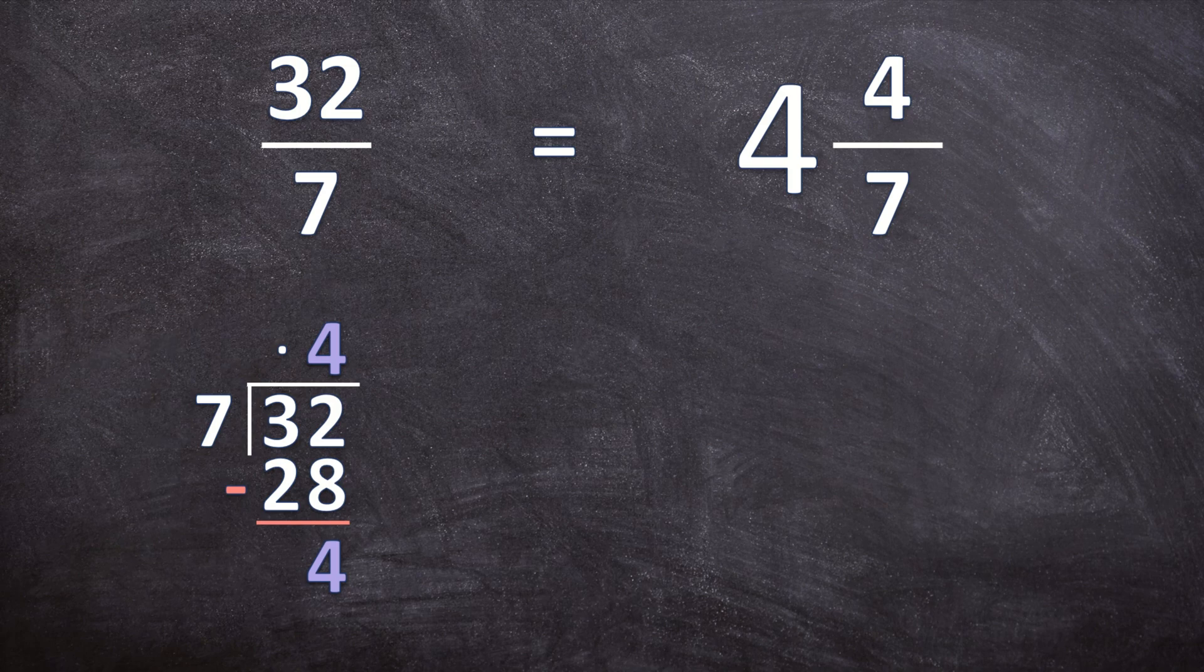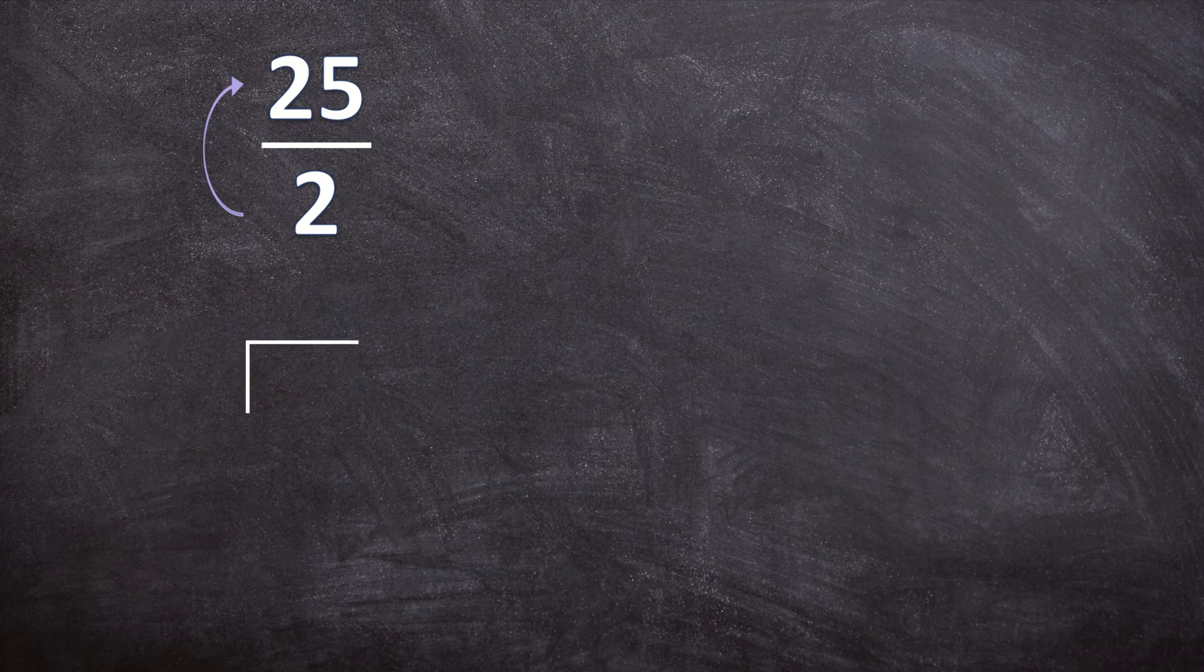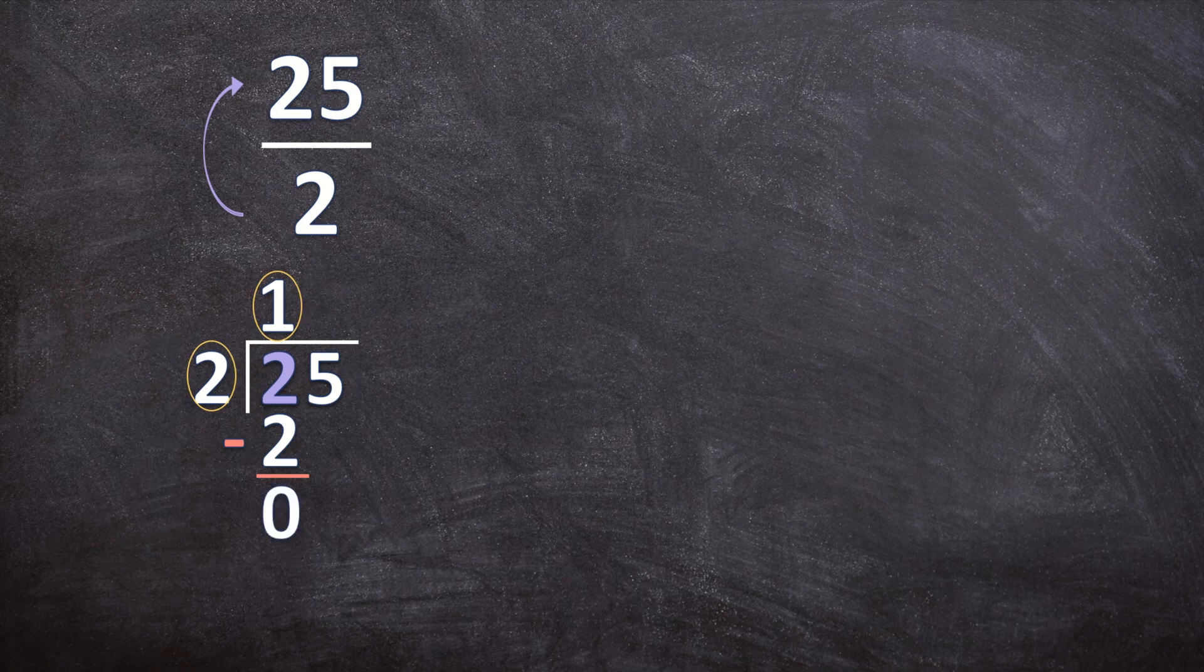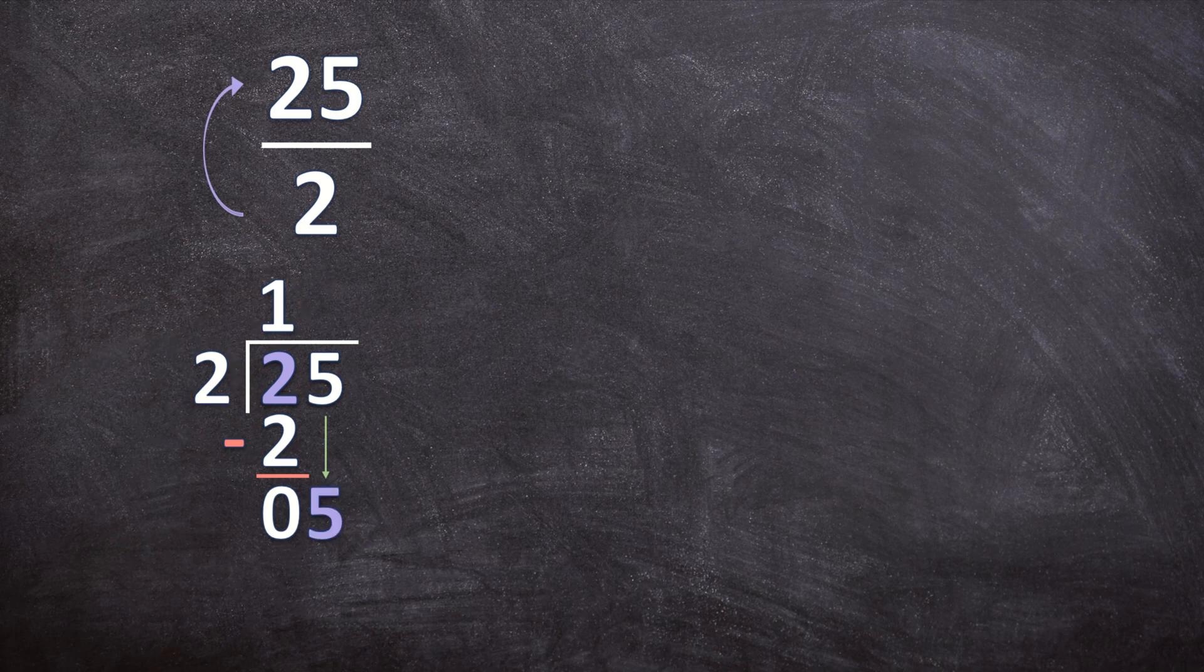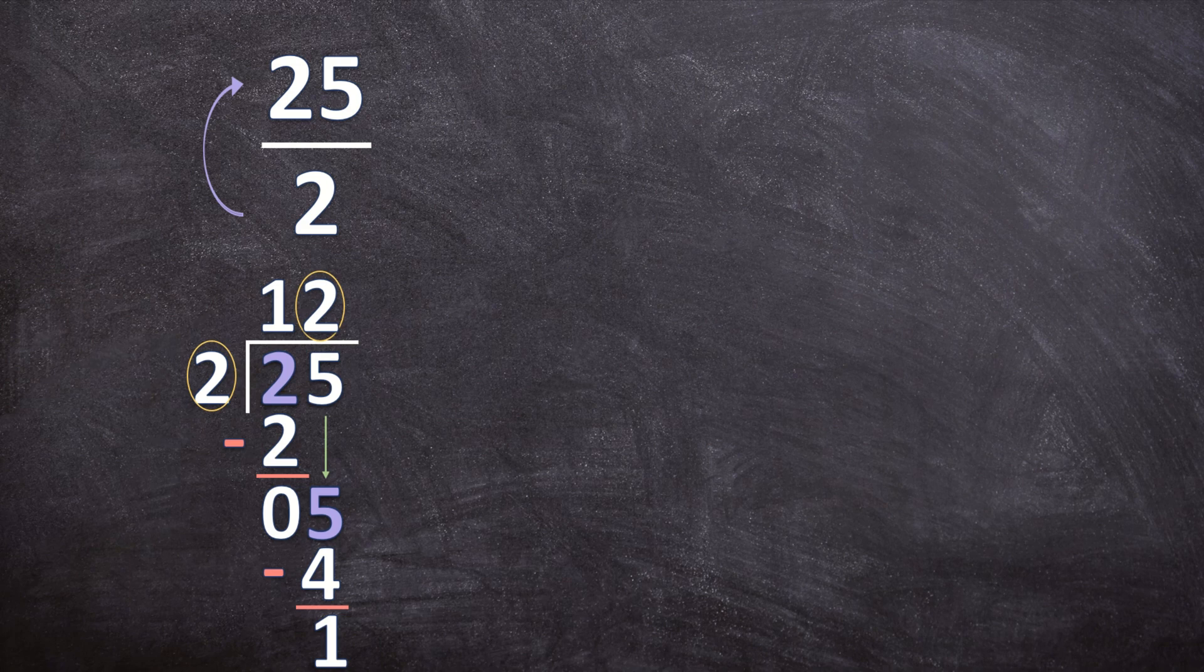Let's look at one more example: 25 over 2. Let's see how many times we can take 2 out of 25. How many times can 2 go into 2? 2 can go 1 time. 1 times 2 is 2. We subtract: 2 minus 2 is 0. Now we bring the next digit down, the 5. And now we ask ourselves how many times can 2 go into 5? 2 can go 2 times into 5. 2 times 2 is 4. Now we subtract: 5 minus 4 is 1.